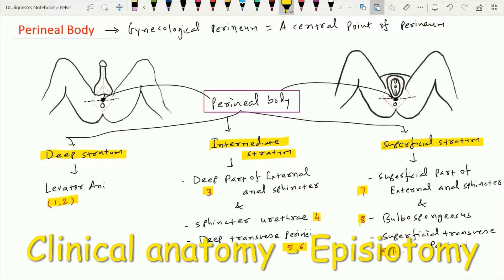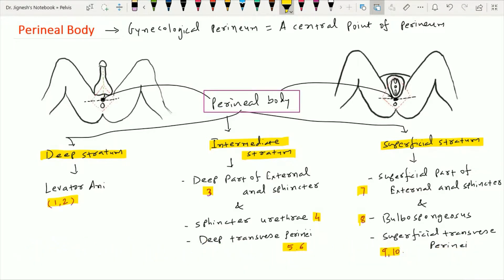The perineal body provides strength to the perineum, especially in the female. Sometimes the perineal body may be torn during parturition, and if not properly repaired, the hiatus urogenitalis — which includes the opening of the vagina — becomes wider, leading to prolapse of the pelvic viscera outside in the female. Therefore, repair of the perineal body is very important after parturition if it is torn.